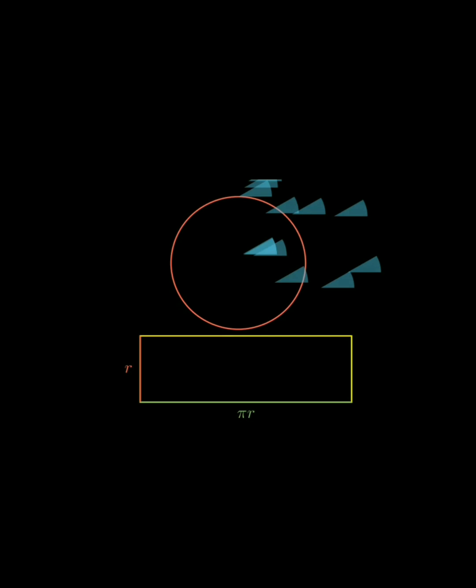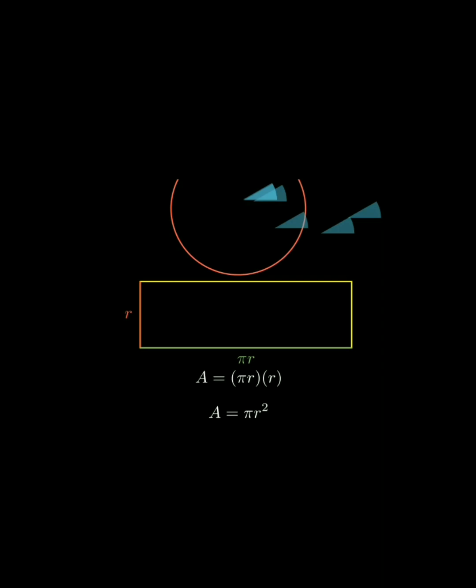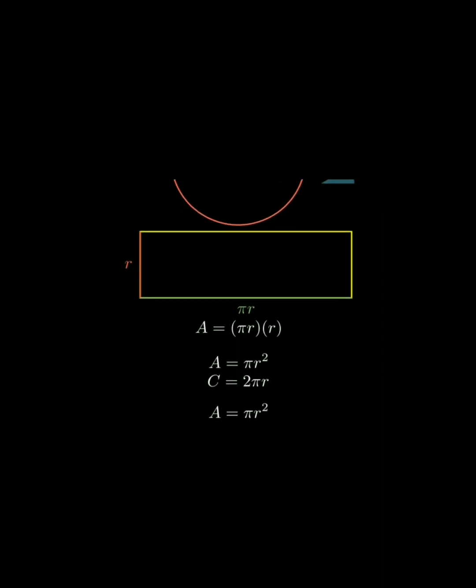The height of this rectangle is the radius, and its base length is half the circumference. The area of a rectangle is base times height, so the area of our circle must be πr times r, which gives us πr². And that's why π appears in both the circumference and area formulas.